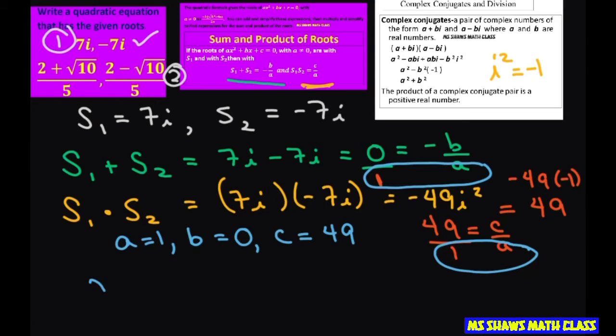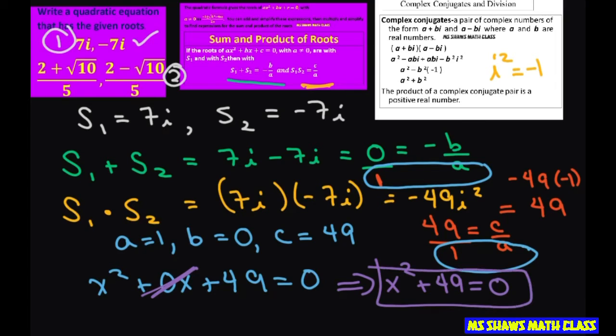When you write this out, you're going to get x squared plus 0x plus 49 equals 0. We don't want this 0, so let's just fix this and write it as x squared plus 49 equals 0. And that is your final answer.